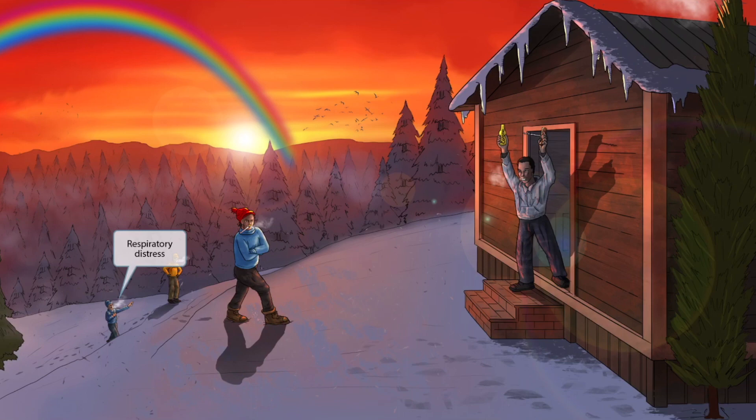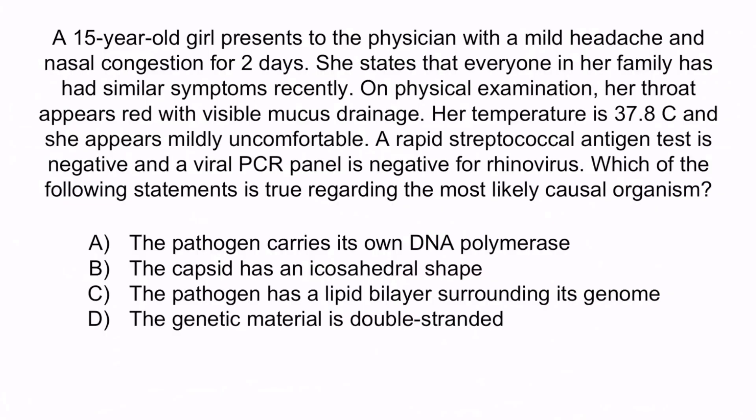Now let's do a question to apply what you've learned. A 15-year-old girl presents to the physician with a mild headache and nasal congestion for two days. Everyone in her family has had similar symptoms recently. On physical examination, her throat appears red with visible mucus drainage, her temperature is 37.8 Celsius, and she appears mildly uncomfortable. A rapid streptococcal antigen test is negative and a viral PCR panel is negative for rhinovirus. Which of the following statements is true regarding the most likely causal organism? A: the pathogen carries its own DNA polymerase. B: the capsid has an icosahedral shape. C: the pathogen has a lipid bilayer surrounding its genome. Or D: the genetic material is double stranded.